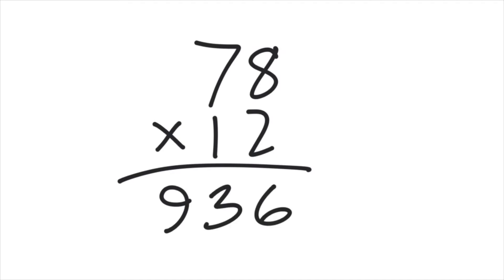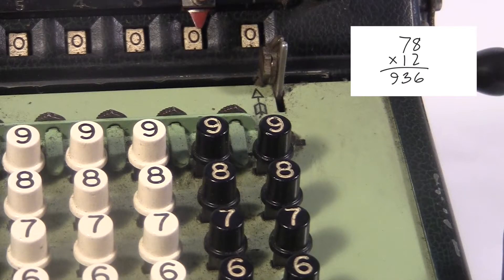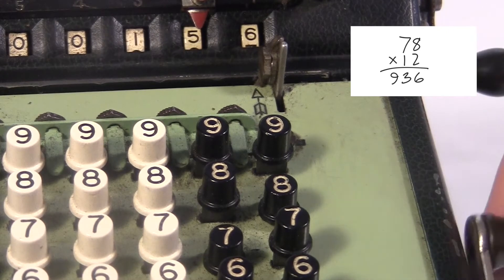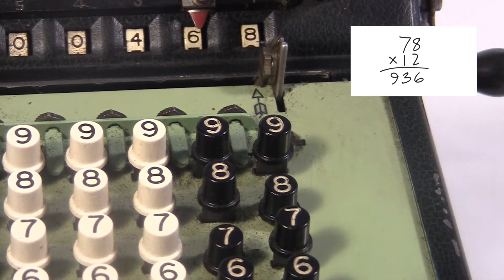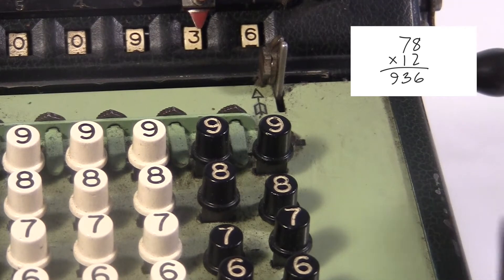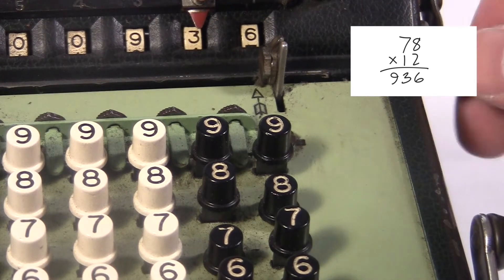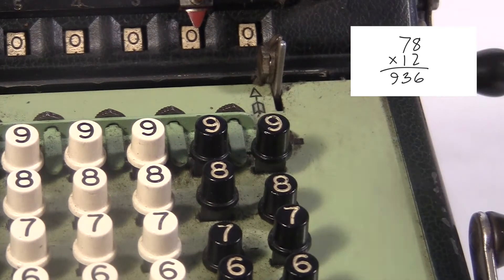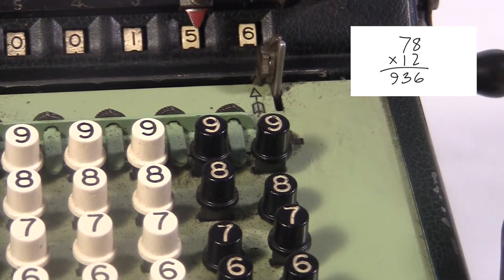Actually, it's better than it seems. If you want to do multi-digit multiplication, like 78 times 12, you could do 78 and turn the crank 12 times. Or if you're a little smart about it, you do 78 two times in the ones position and then 78 one time in the tens position.